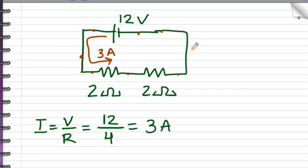So the number of electrons per second crossing by this point is the same as the number of electrons crossing by this point in a second.